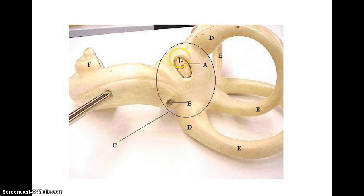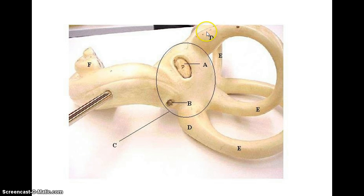Again: the oval window, which will sit below the stapes; the round window; the semicircular canals; the ampulla; this whole area here is called the vestibule; and the cochlea.